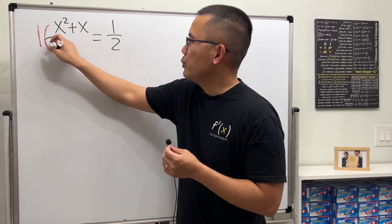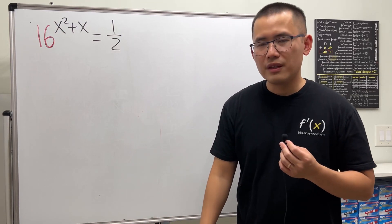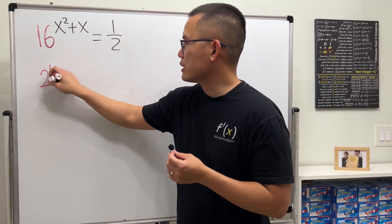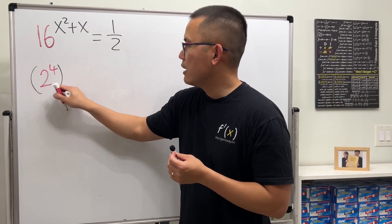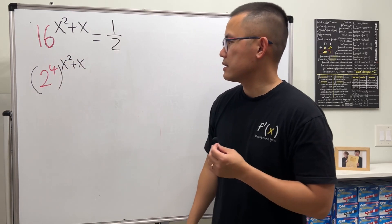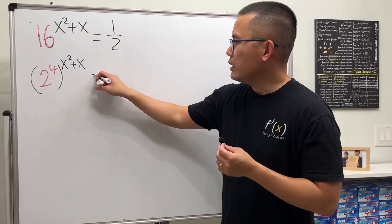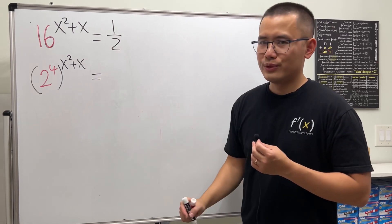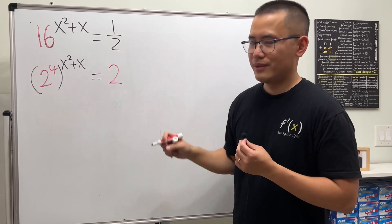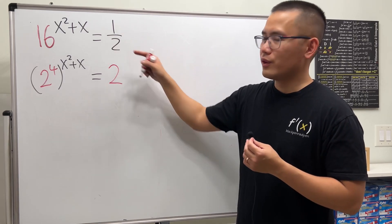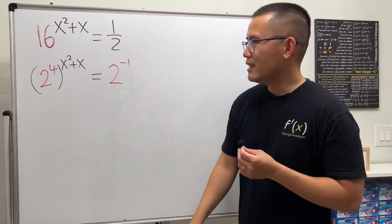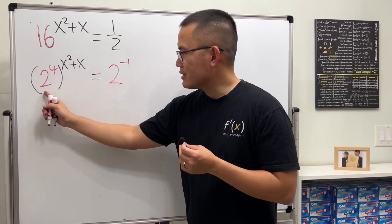Can we break down 16? Sure — it's 2 to the fourth power. So let me write that down as 2 to the fourth power, raised to the x squared plus x. On the right-hand side we have 1 over 2. We can also write this as 2 to some power — 2 to what power gives us 1 over 2? The answer is the negative first power. So now we have the same base on both sides.